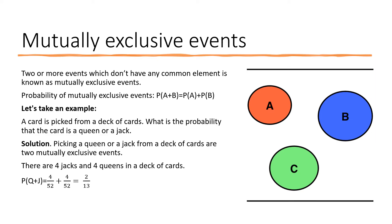In the Venn diagram, mutually exclusive events are shown as independent sets with no overlap. Events A, B, and C have nothing in common — the happening of each is independent, with no dependency on the others, and there is no overlap between them.